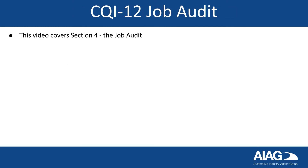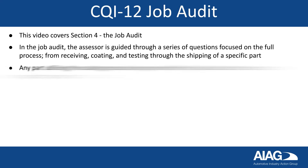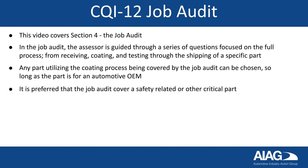This video covers section 4, the job audit, which guides the assessor through a series of questions focused on the full process, beginning with receiving and ending with the shipping of a specific part. Any part utilizing the covered coding process can be chosen to audit, so long as the part is for an automotive OEM. However, it is preferred to audit a safety-related or other critical part.